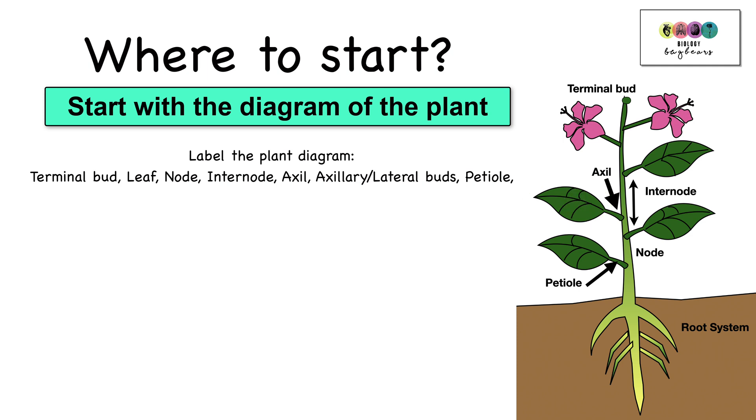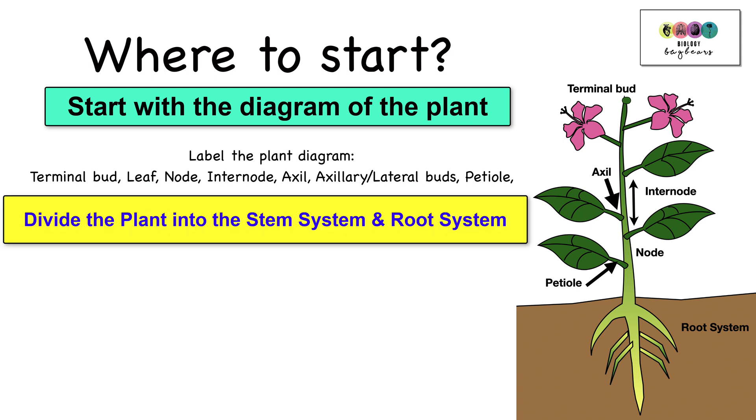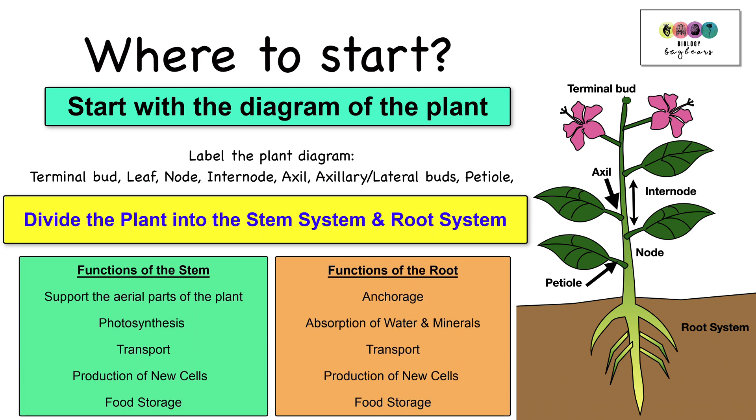Pay attention to the internode, the axle, the petiole and the node. Then divide the plant into the stem system above ground and the root system below ground. And make a checklist of the functions of the stem followed by the functions of the root. And bear in mind that it's usually the functions of the root which stump students.